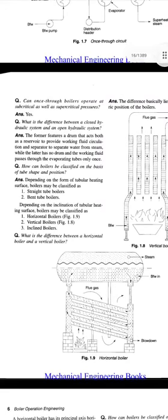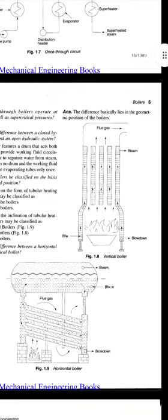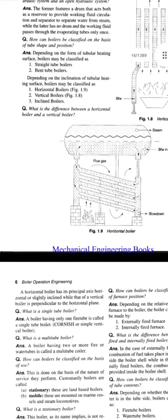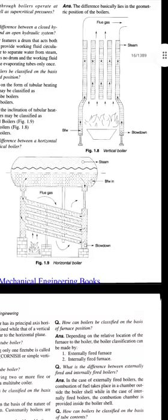What is the difference between horizontal and vertical boilers? The difference basically lies in the geometric position of the boiler. A horizontal boiler has its principal axis horizontal or slightly inclined, while that of the vertical boiler is perpendicular to the horizontal plane.